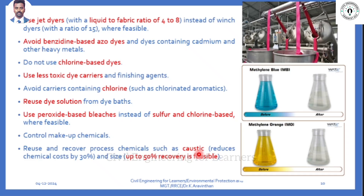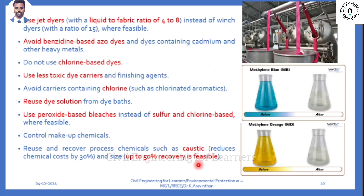The most difficult process in textile is converting colored wastewater into pure water - it is costly. During manufacturing, you should not use chlorine-based dyes. Use jet dryers instead of boilers - jet dryers are air-based dryers. Reuse or recover chemicals wherever possible - up to 50 percent of recovery is possible during the dyeing process.